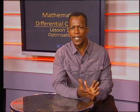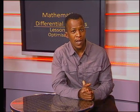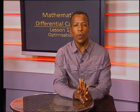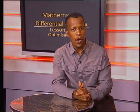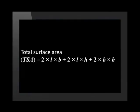That question was very easy, and it didn't involve any calculus. It set the scene for the next question. Determine the dimensions — the length, breadth, and height — of the prism for which the total surface area will be a maximum. Because the question deals with the total surface area, we will use the formula for the total surface area of a rectangular prism. Total surface area, or TSA, equals 2 times length times breadth, plus 2 times length times height, plus 2 times breadth times height.